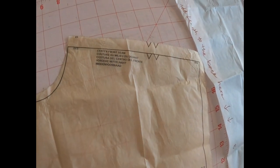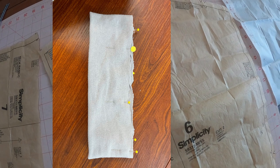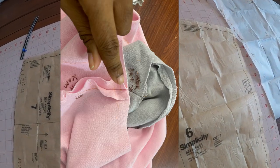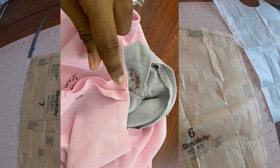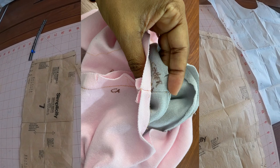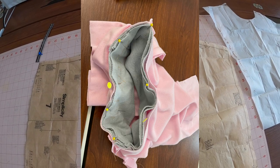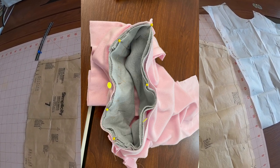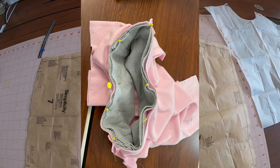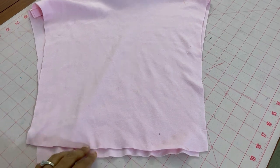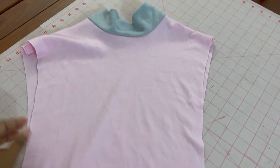Take your neckband tube and match the center back seam to the center back seam of the top. Pin everything together and sew your neckband onto your top. This is where you would stretch to fit if your neckband is a little bit shorter. So after you sew the neckband on, it'll look something like this.